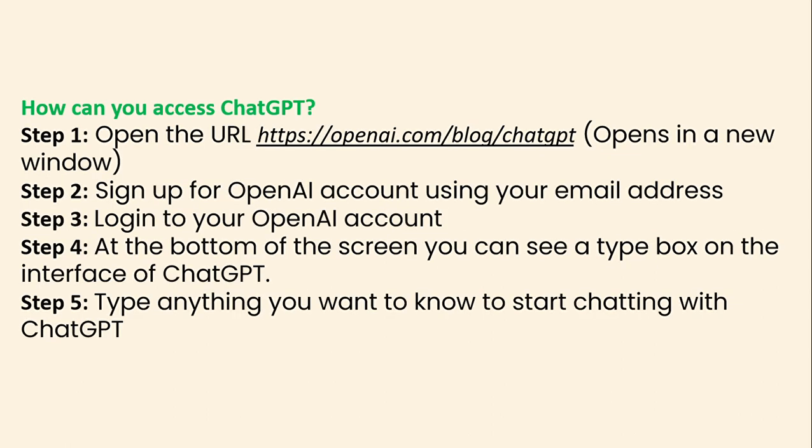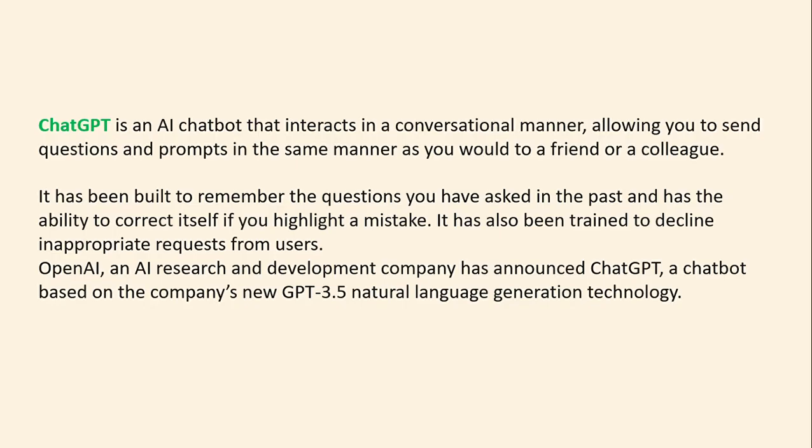Step one: go to openai.com, open the ChatGPT page in any browser window, and sign up for an OpenAI account using your email address, then log in. At the bottom of the screen, you can see a text input box on the chatbot interface. Type anything you want to know to start chatting.